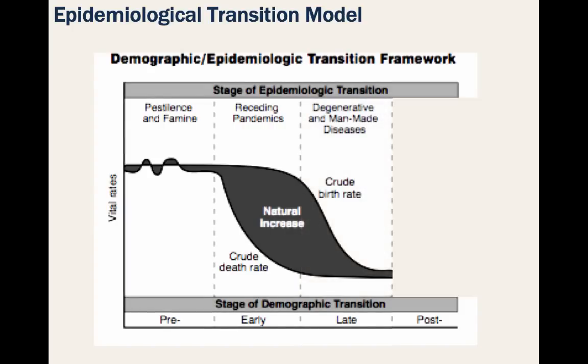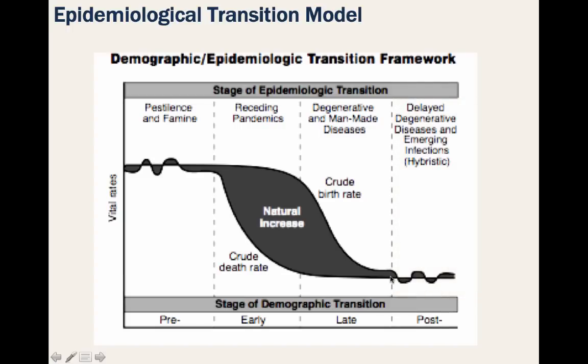Stage 3 is the age of degenerative and man-made diseases. Here, as society develops even further, mortality continues to decline and eventually approaches stability at a relatively low level. Ultimately, this predicts the same thing as the demographic transition model — it just does it from a different angle.